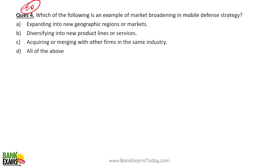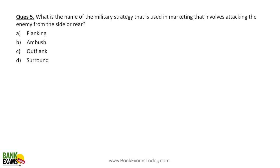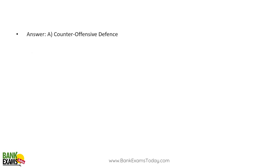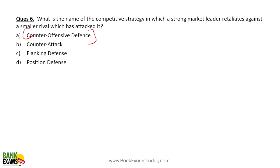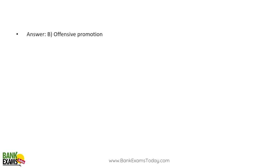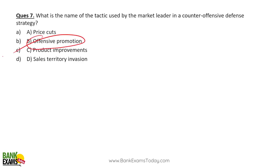Which of the following is an example of market broadening in mobile defense strategy? Answer: expanding into new geographic regions. I gave the Bajaj Auto Boxer example — they expanded into Africa, going into new geographies and new products. What is the name of the military strategy used in marketing that involves attacking the enemy from the side or air? That is flanking. What is the name of the comparative strategy where a strong market leader retaliates against a small rival? That is counter-offensive defense. The tactic used by a market leader in counter-offensive defense is offensive promotions — that's what Airtel did when Jio tried to become the market leader.